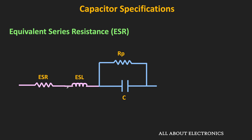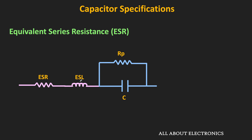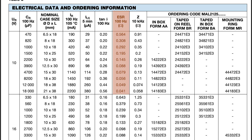ESR is particularly important when high AC currents are flowing through the capacitor. When high current flows through it, there will be power dissipation across this series resistance, leading to generation of heat inside the capacitor and a rise in temperature. The temperature of the capacitor should not go beyond the rated temperature range, so the power dissipation inside the capacitor should be as low as possible — in other words, the value of ESR should be as low as possible.